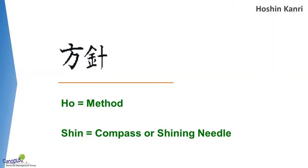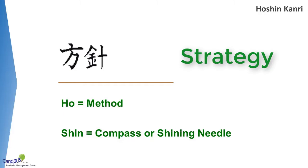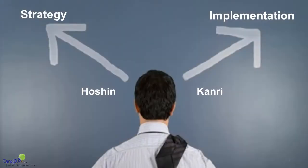So what is Hoshin Kanri? Hoshin Kanri are two Japanese words: Hoshin and Kanri. Hoshin itself is a combination of two Chinese words, Ho and Shin. Ho essentially refers to something like method, and Shin is more like a compass. So we are talking about strategy, broadly speaking, and Kanri is the equivalent of management. So broadly, Hoshin Kanri means strategy implementation or strategy execution.